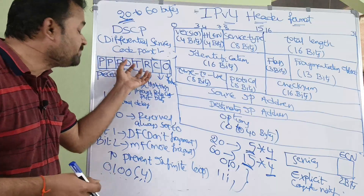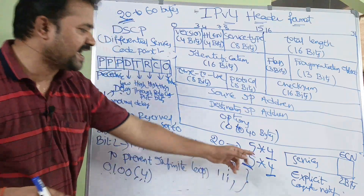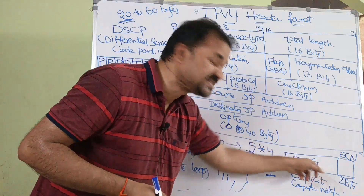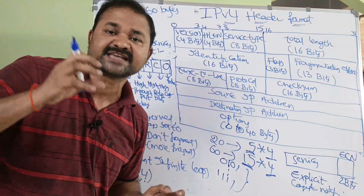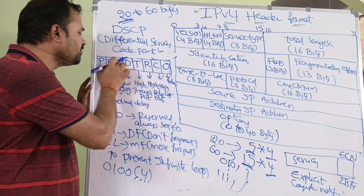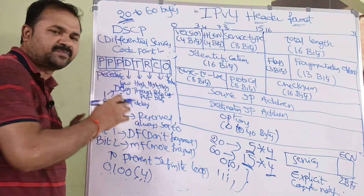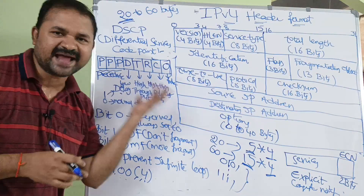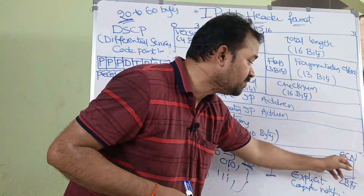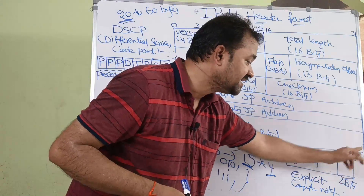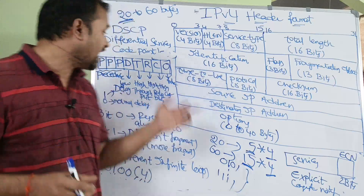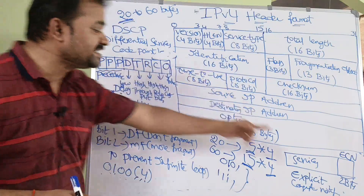Later, these 8 bits are reorganized. The first 6 bits specify services — that is 2 precedence bits followed by D, T, R, C bits. After that the last 2 bits specify ECN — Explicit Congestion Notification. So the 8 bits are split as 6 service bits and 2 ECN bits.